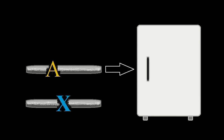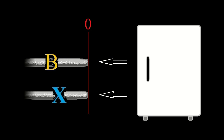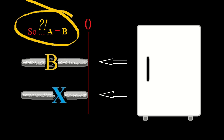Now let us redo the experiment as before, but instead of putting just the metal bar A in the freezer, we also put the other bar X in the freezer with A. Obviously, this is not a valid experiment, because the standard of length X, essential to the measure of length, is now functionally attached to the experiment. Obviously, it will also shrink in the freezer, nullifying its logical use as a standard.